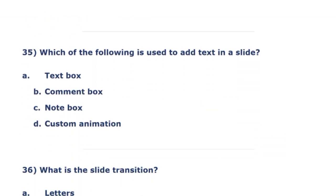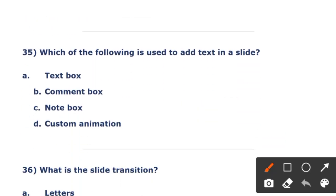The next question: which of the following is used to add text to a slide? The options are text box, comment box, note box, and custom animation. The right answer is option A — text box is used to add text to a slide.